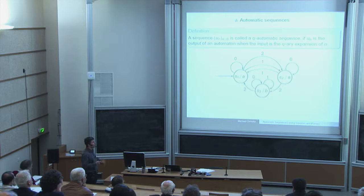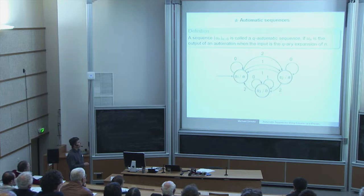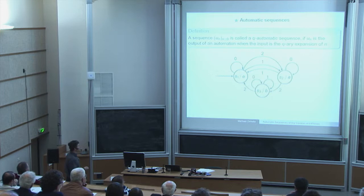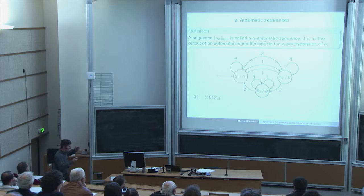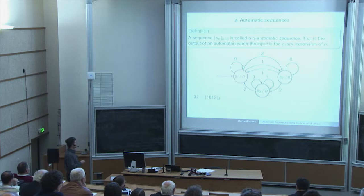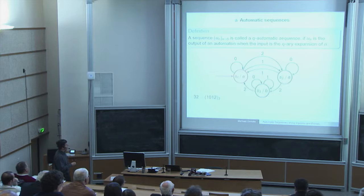What is an automatic sequence? You start with a finite automaton; the output of an automaton is an automatic sequence when the input is a q-ary expansion of an integer. You feed the automaton with the digits, and then the output is the automatic sequence. For example, this automaton with three states uses a ternary expansion. The number of states is not necessarily related to the base. Starting at the initial state, you read the digits — you can do it from the left or right.